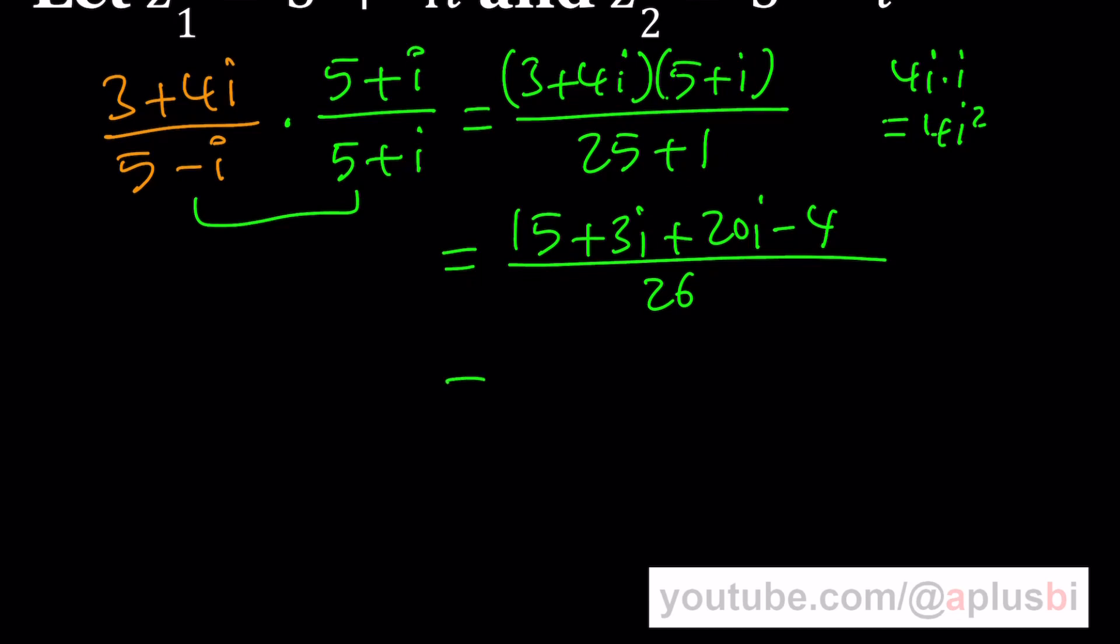So this becomes 11 plus 23i divided by 26. And then if you just write this separately, 11 over 26, remember we just talked about it, and then you're going to get the answer as another complex number. So if you divide a complex number by another complex number, you still get a complex number. Make sense?